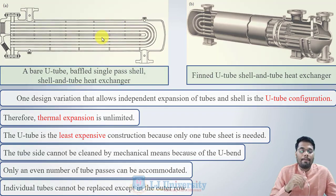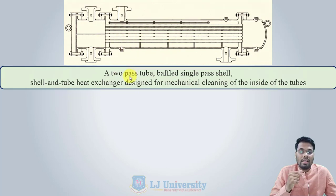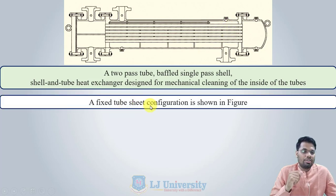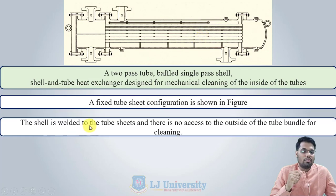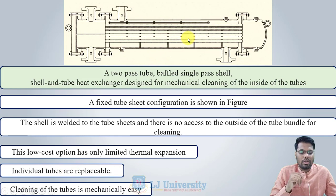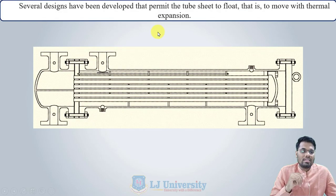The next arrangement is a two-pass tube, baffled single pass shell and tube heat exchanger, designed for mechanical cleaning of the inside of the tubes. A fixed tube sheet configuration is shown where the shell is welded to the tube sheet, so there is no access to the outside of the tube bundle for cleaning. This is a low-cost option with only limited thermal expansion, but individual tubes are replaceable and mechanical cleaning of the tube interior is easy.